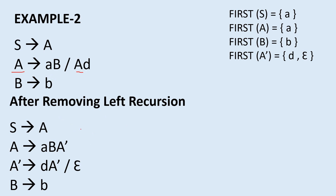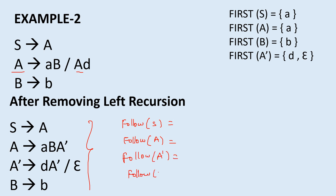Now let us look at another example where left recursion has been removed. These are the productions after removing left recursion. We need to find follow(S), follow(A), follow(A'), and follow(B). Follow(S): S is the start symbol, so include dollar. There is no S on the right-hand side. Follow(A): A appears only in one production and is the last non-terminal, so follow(A) = follow(S) = {$}.